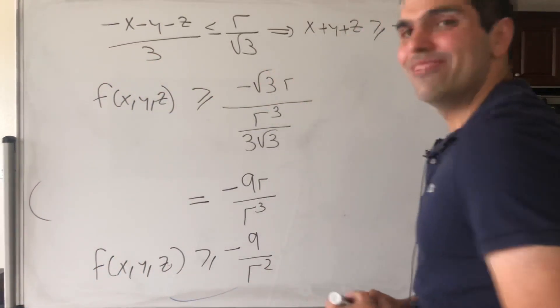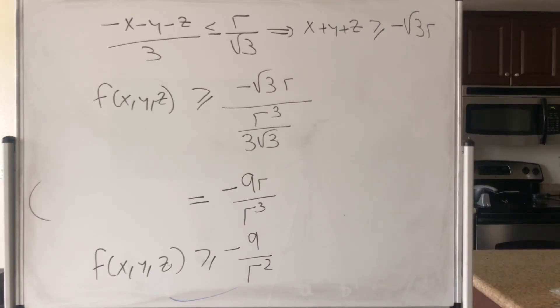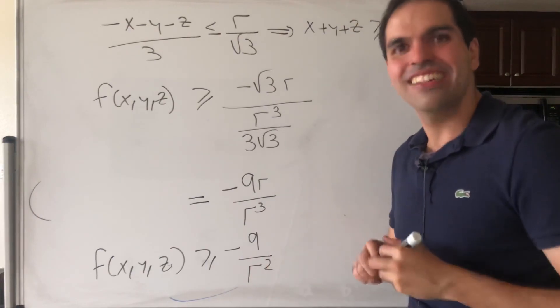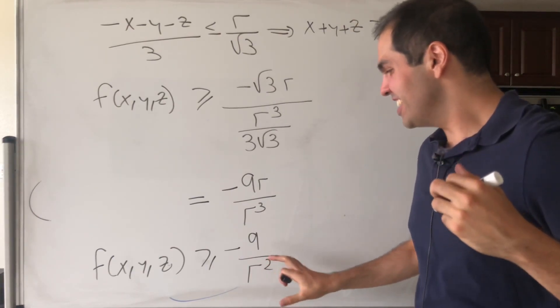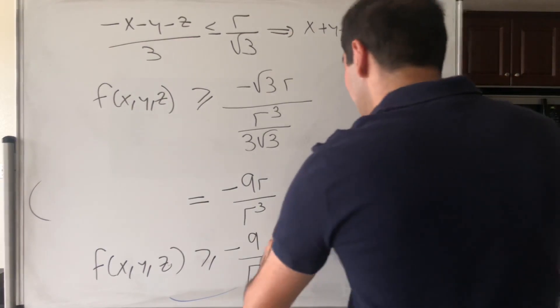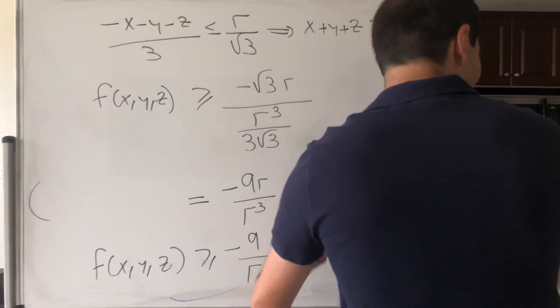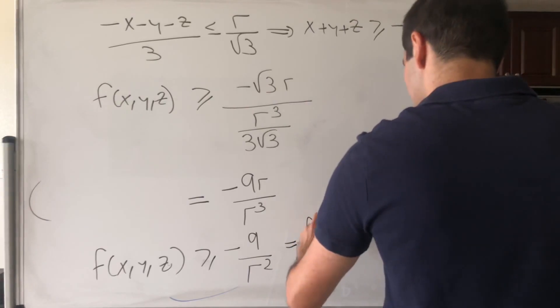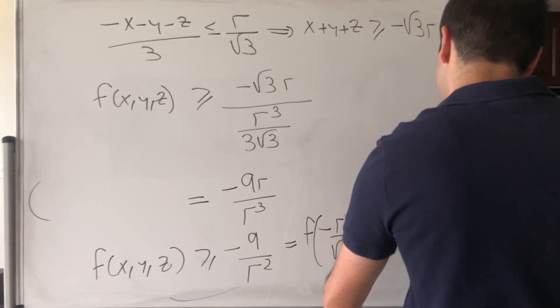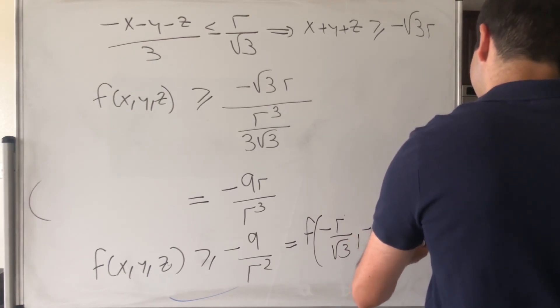But just because it's bounded below, it doesn't mean it's the minimum, but we're actually in big luck, and this is what makes this problem so magical. This is actually a value of f, namely, it's f of minus r over square root of 3, minus r over square root of 3, minus r over square root of 3.